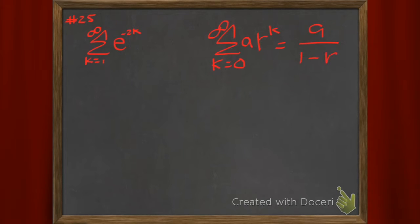We're trying to get this of the form a·r^k where |r| is smaller than 1. If it is, it's an infinite geometric series and it's going to converge to a divided by 1 minus r.